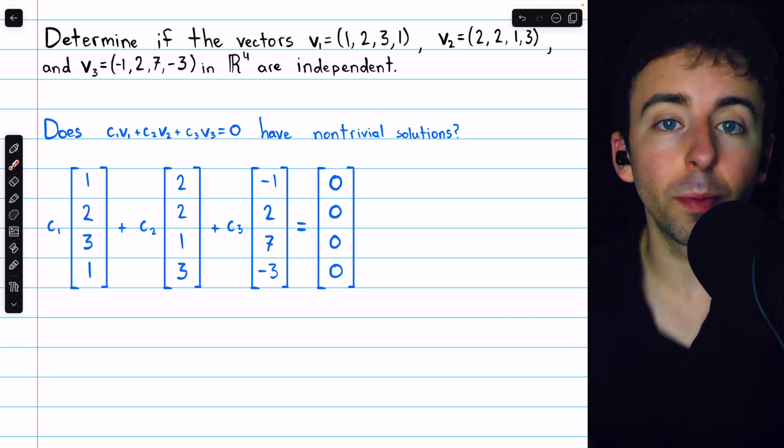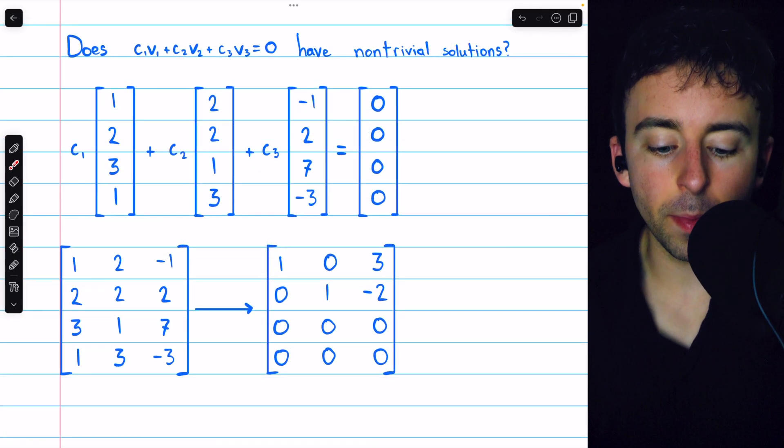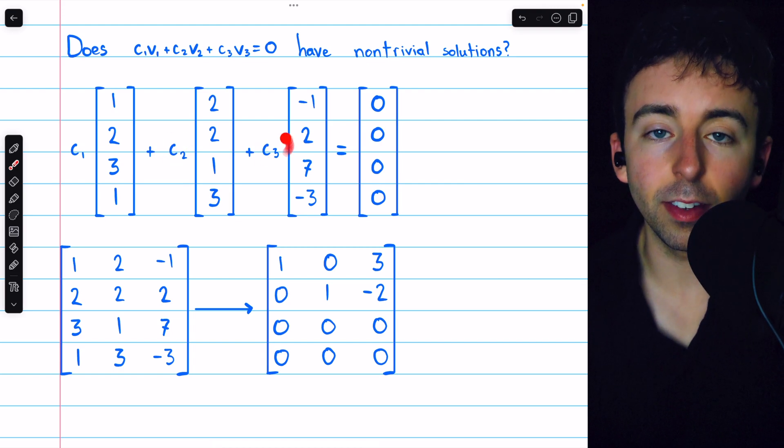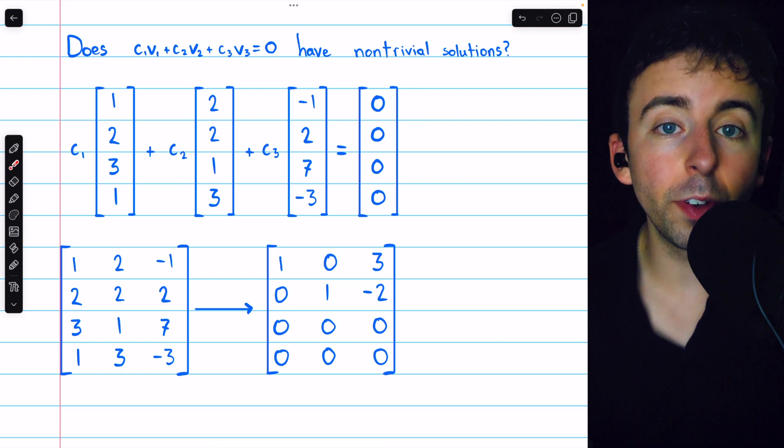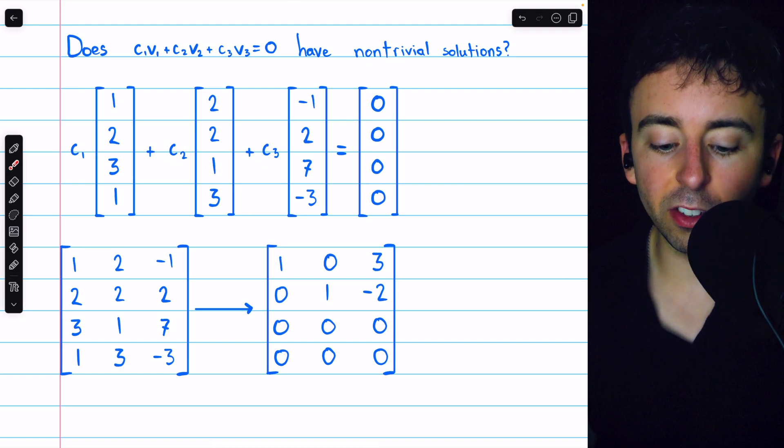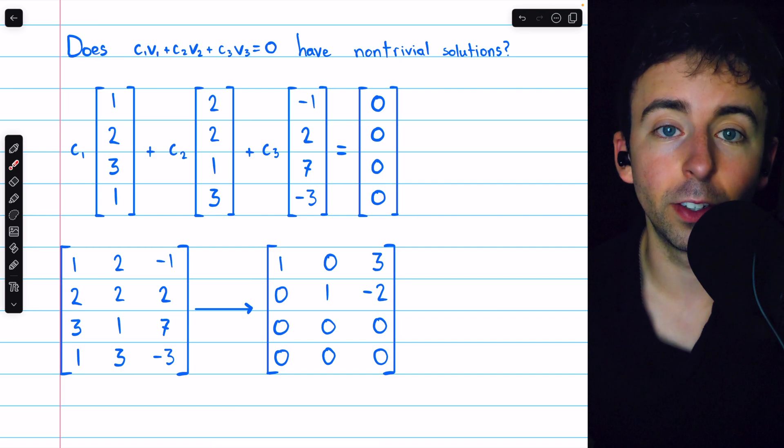This gives us a system that we can solve. The system has these scalars as its variables, and the coefficient matrix of the system is just this matrix here, whose columns are the three vectors whose dependence we're trying to determine.